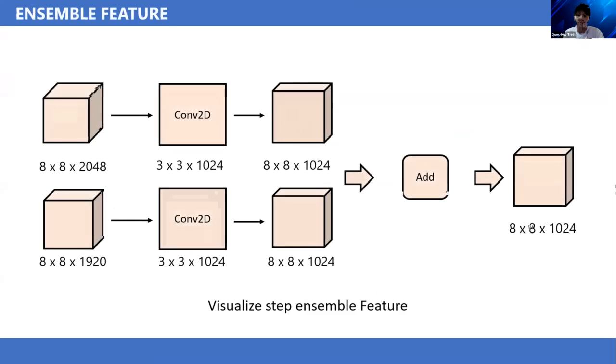This is our explanation of the ensemble feature technique used in our proposed method. We have 8x8x2048 number of filters and 8x8x1920 number of filters. When we pass through convolutional 2D with 1024 filters, we have the same size of tensor. We calculate the sum of two tensors to create the output for our classification process.